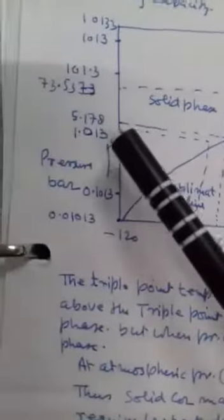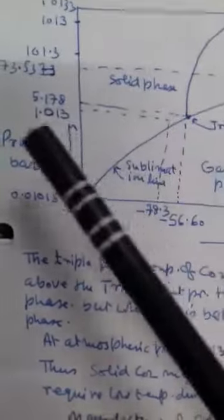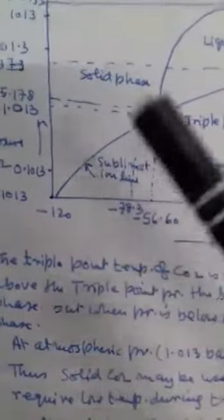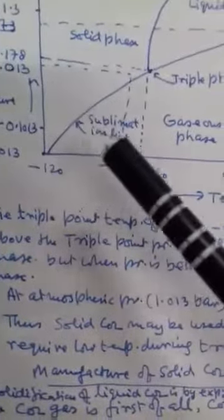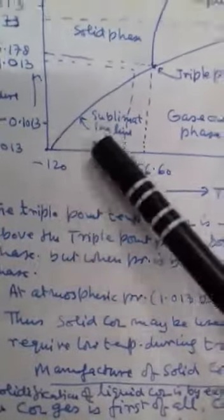So at atmospheric pressure, this solid phase directly changes into gaseous phase. That's why this is called dry ice for CO2. At atmospheric pressure, 1.013 bar, the solid CO2 sublimates to gas at a temperature of minus 78.3 degrees Celsius. Directly, solid phase is sublimated to gaseous phase.